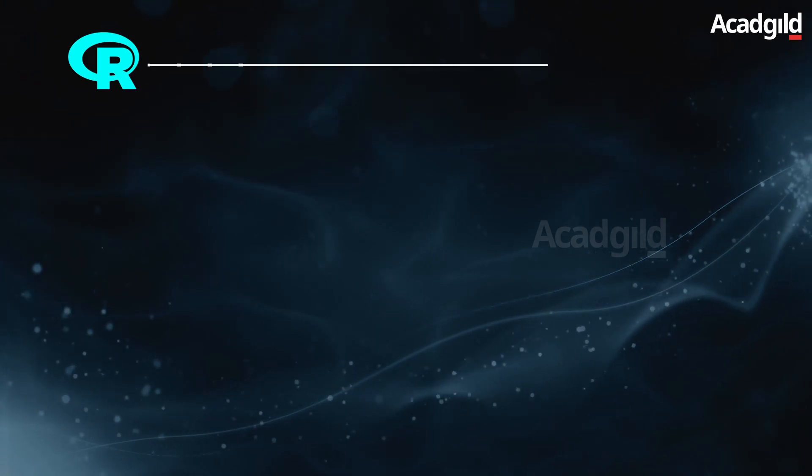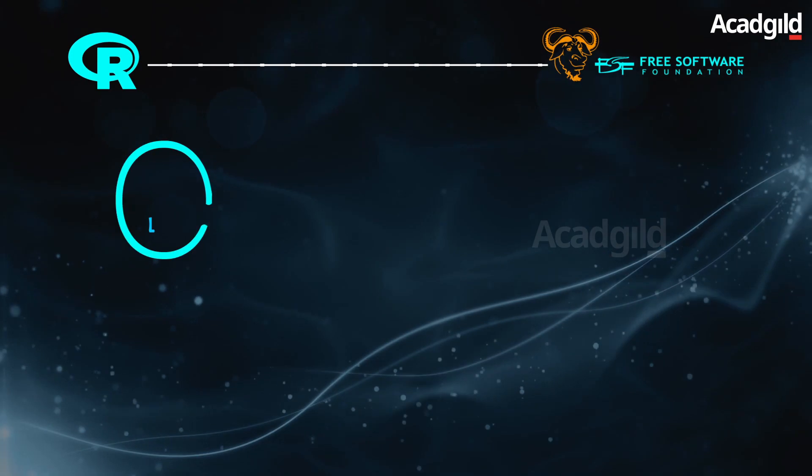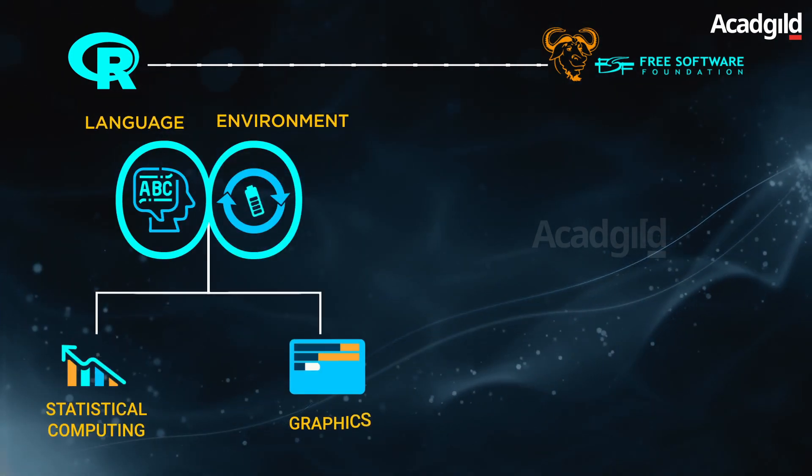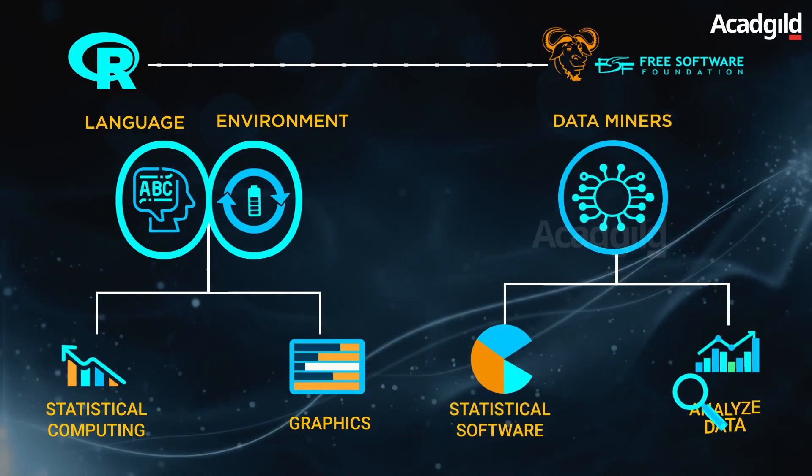What is R? It is a free software under the terms of the Free Software Foundation's GNU. The language and environment are ideal for statistical computing and graphics. Data miners basically use it for creating statistical software and to analyze data.